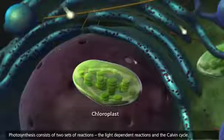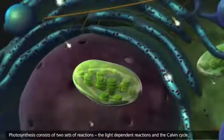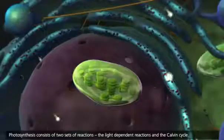Photosynthesis consists of two sets of reactions: the light-dependent reactions and the Calvin cycle.